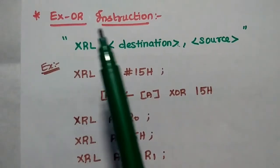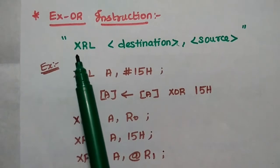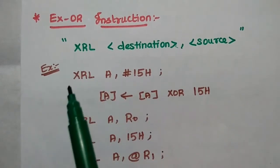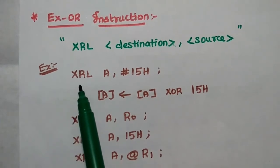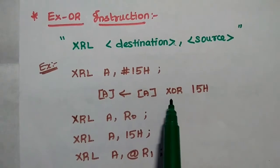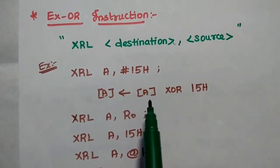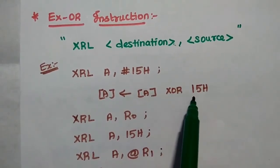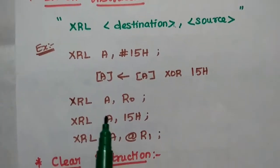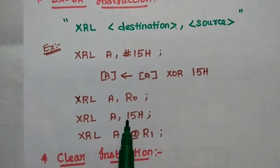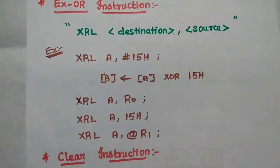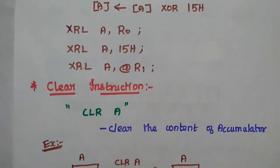The next instruction is the XOR instruction, represented as XRL destination, source. For example, XRL A, #15H means to perform the XOR operation between the content of the accumulator and the data 15H, and move the result to the accumulator. Additional examples are XRL A, R0; XRL A, 15H; and XRL A, @R1.